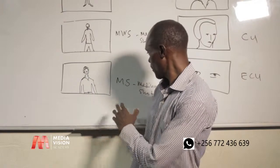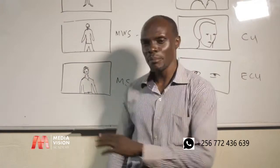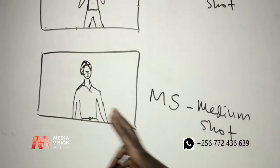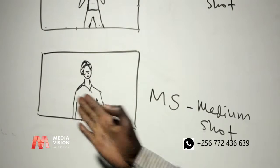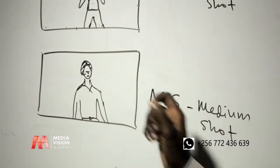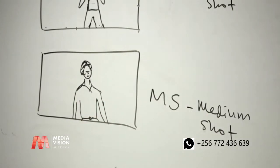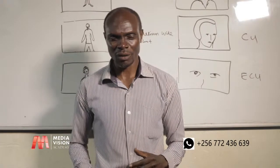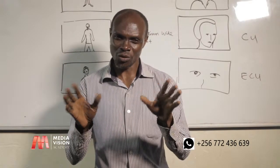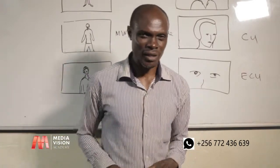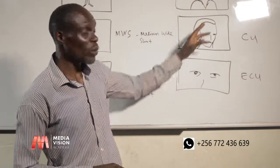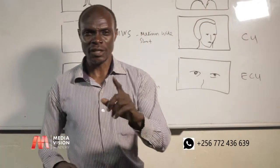Then we looked at the medium shot — a shot that we take from the head to somewhere just above or below the belt. If your subject does not have a belt, you look for the waistline, just at the waistline. That's the medium shot.